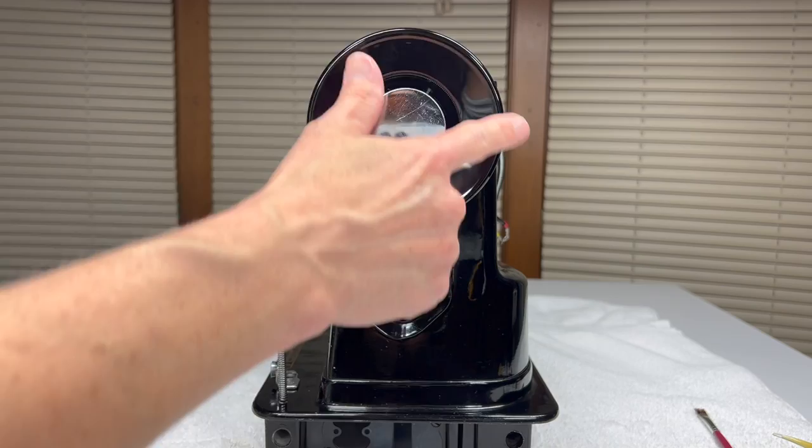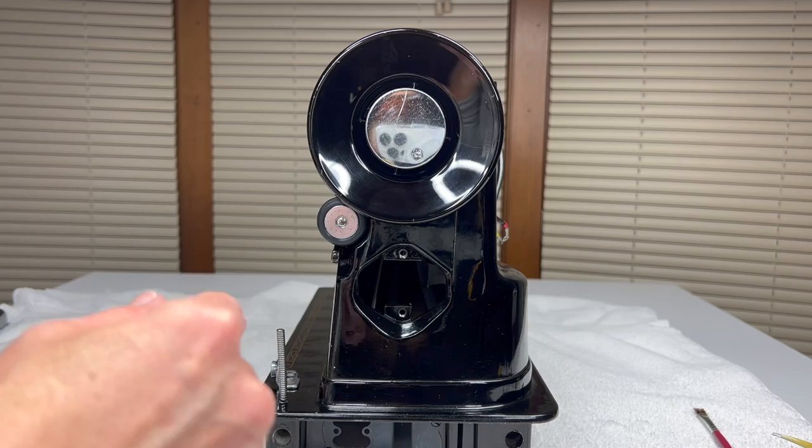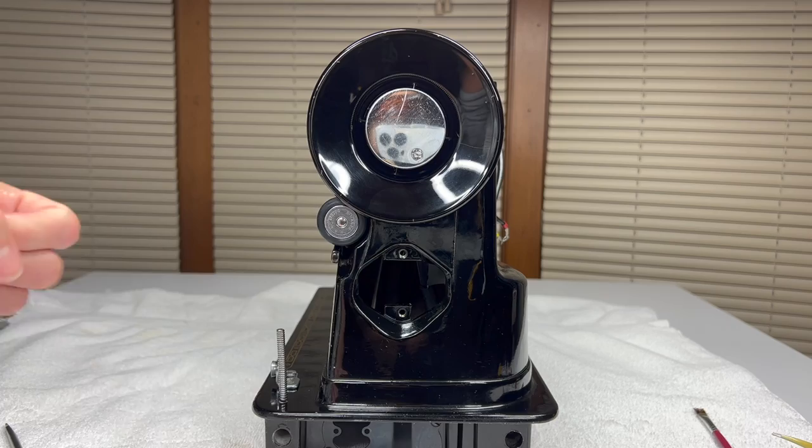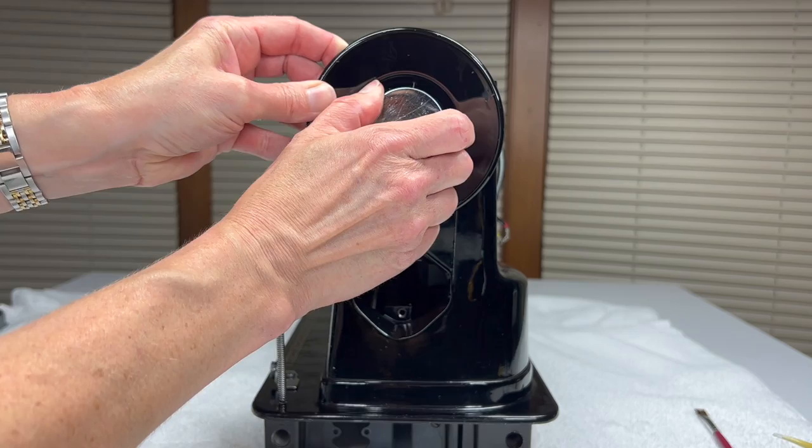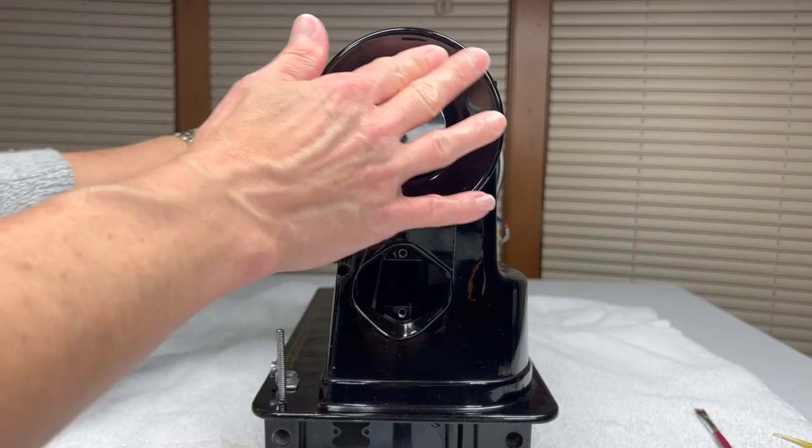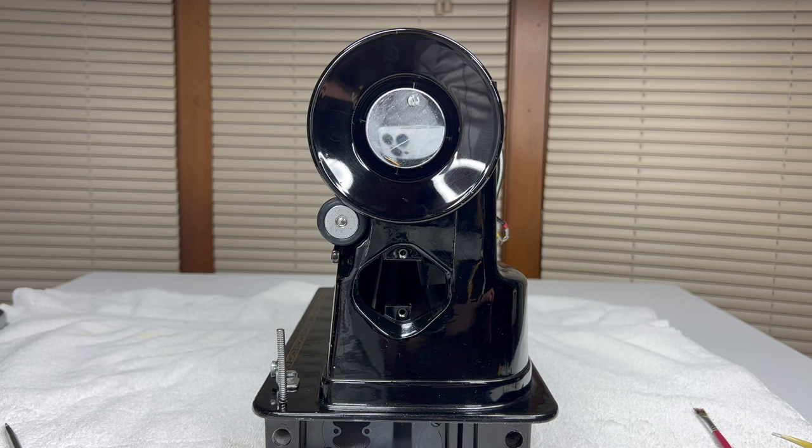All this does is makes it so when you wind your bobbin, your needle still isn't going up and down and you're not using those parts of the machine unnecessarily. So then I can turn it back clockwise, tighten it up, spin the hand wheel towards me. Now the counter balance in the nose is moving. And I'm going to show that to you so you can see what I mean.